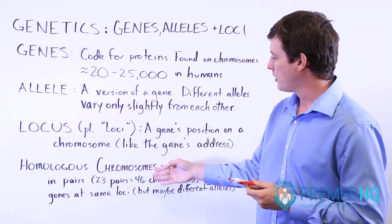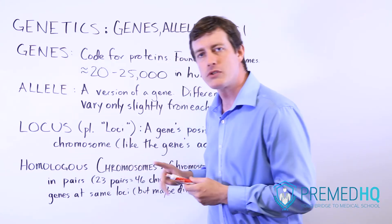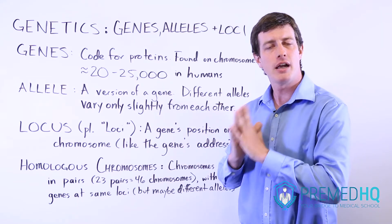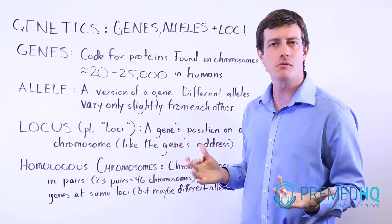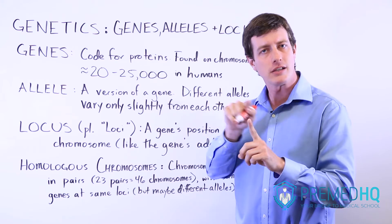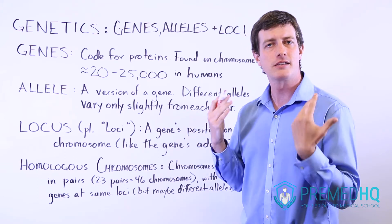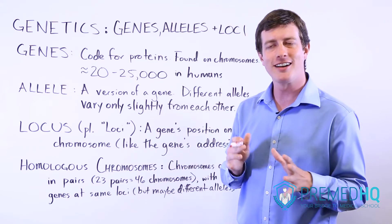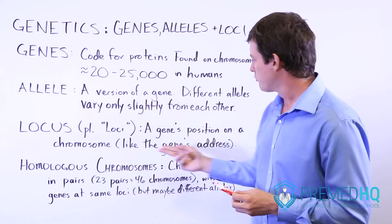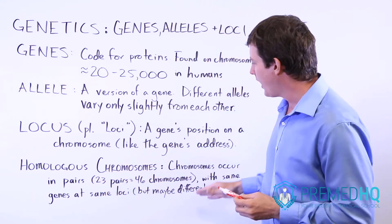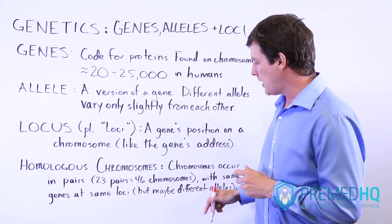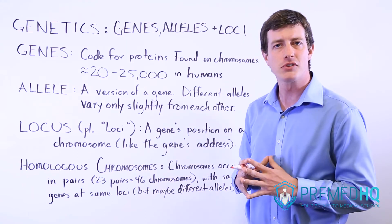There's also the term homologous chromosomes. In the human body we have 46 chromosomes, organized into 23 pairs. The two chromosomes within a pair are homologous to each other, meaning they contain the same genes but may or may not contain different alleles of those genes. So the chromosomes occur in pairs and will have the same genes at the same loci, but they might present different alleles.